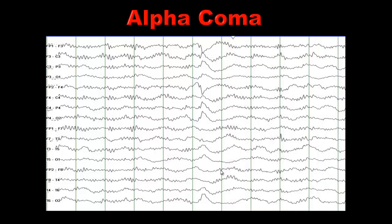Alpha-coma is basically a patient who is comatose and you see alpha frequencies throughout the EEG. The term alpha-coma is reserved when no other medications are being given — if a patient is put in coma from Propofol infusion, I would not call it alpha-coma. So alpha-coma has alpha frequencies in a comatose patient with no anterior-to-posterior differentiation. In a normal EEG, alpha frequencies are seen in the occipital head region and attenuate when a person opens their eyes. In alpha-coma, you see alpha frequency both anteriorly and posteriorly, and it does not react to external or painful stimulation.